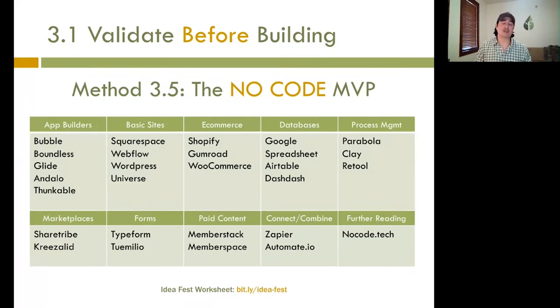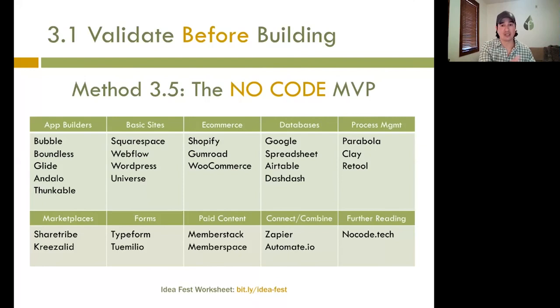There are so many tools now available for you to cobble things together to validate your idea. This is an MVP — a minimum viable product. You are not trying to start off by spending a lot of money and time on a solution that you don't know needs to exist. Just cobble things together to get validated.